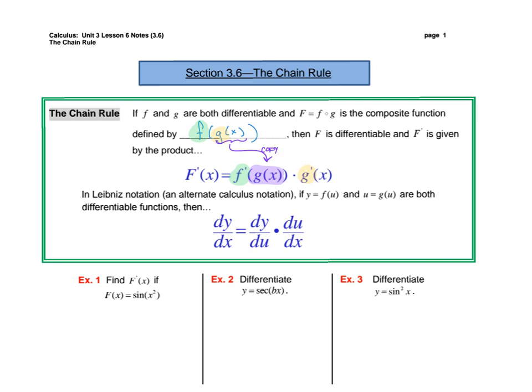We are going to take the derivative of the outside function — the green part, the f part — and then we are going to take the derivative of the inside function. This part right here just gets copied when we do our first derivative, so we only take the derivative of each thing one time.